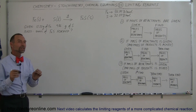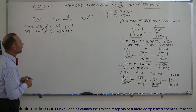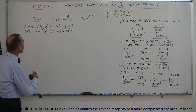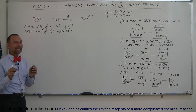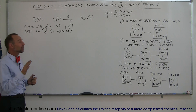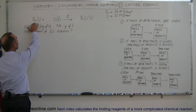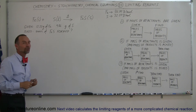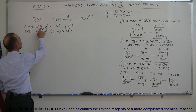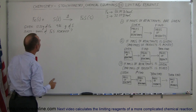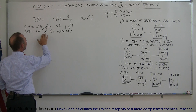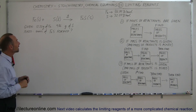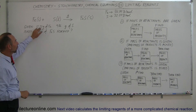Here we have another example with a wrinkle — how to find the amount of product when given a certain amount of reactant. In this case we have a limiting reactant, but we don't know which one it is. We have iron added to sulfur, with heat, turning into iron sulfide. We're given 12.22 grams of iron and 9.86 grams of sulfur, and we're asked how much mass of iron sulfide is formed. Is iron or sulfur the limiting reactant?